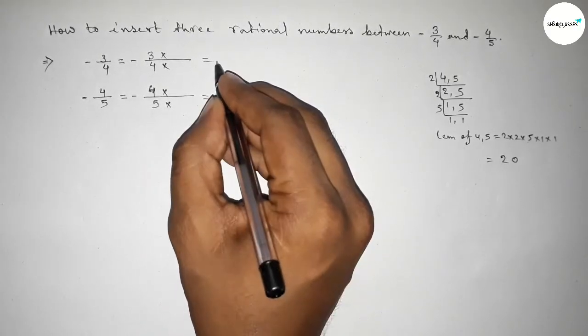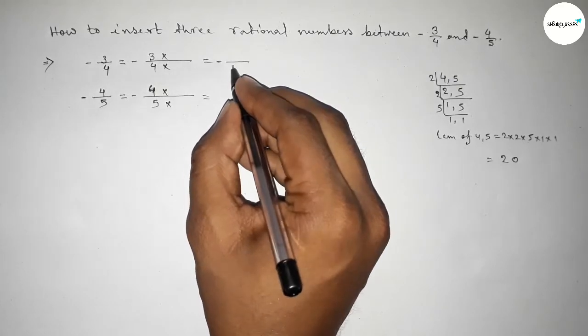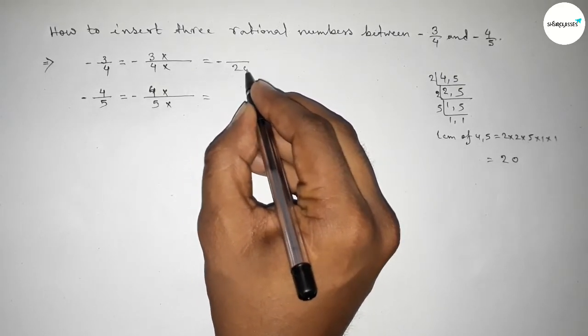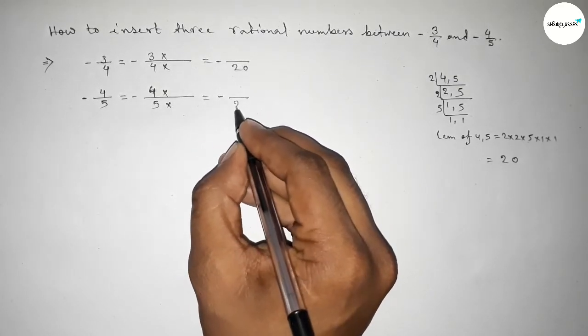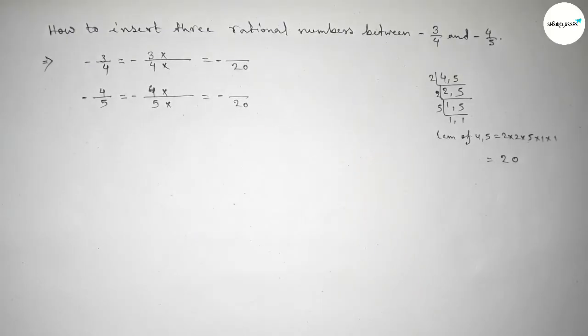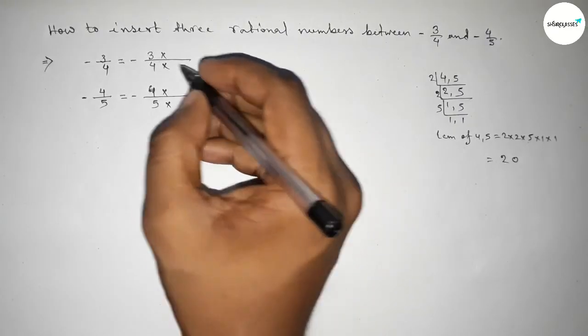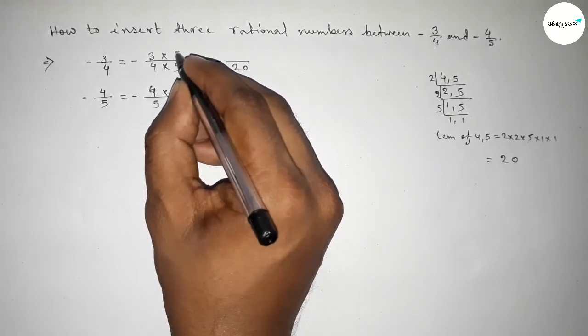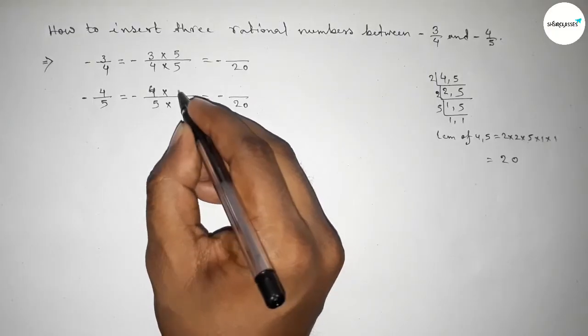So what should we multiply with both numbers up and down? Here, if you multiply by up and down 5, and here by 4, so this one is -15/20 and this one is -16/20.